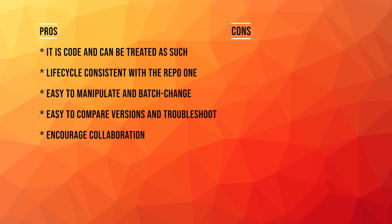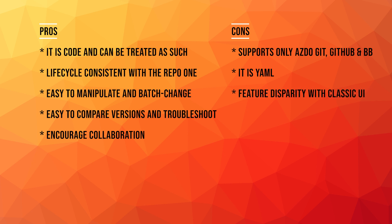Of course, YAML pipelines also have cons. First, they support only Azure Repos Git, GitHub, and Bitbucket Cloud — so if you're using TFVC, SVN, or external Git providers, you cannot use YAML pipelines. You also have to learn YAML. There is an assistant that helps build the YAML files, so it's not super difficult for inexperienced users, but it's still YAML. Lastly, while some new features are available only for YAML pipelines, other features are not as mature as with the classic UI. Some features are still on the roadmap, and some — like post-deployment approvals — may never be added to YAML pipelines.